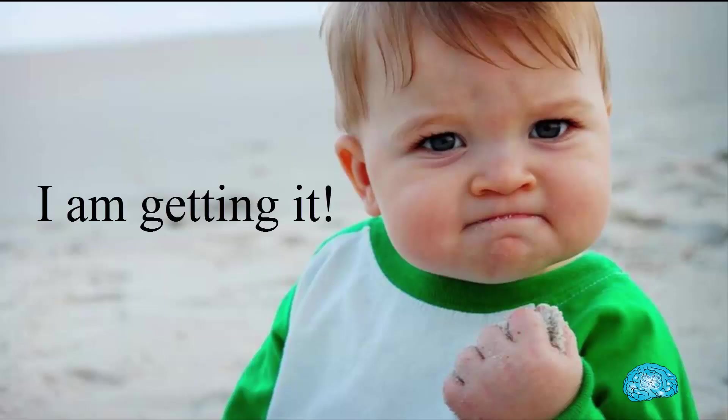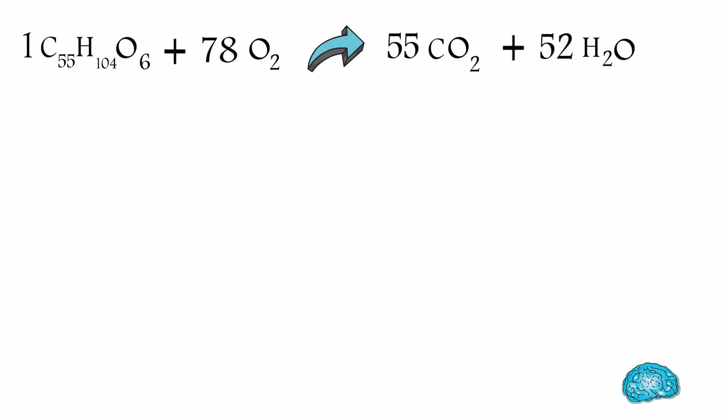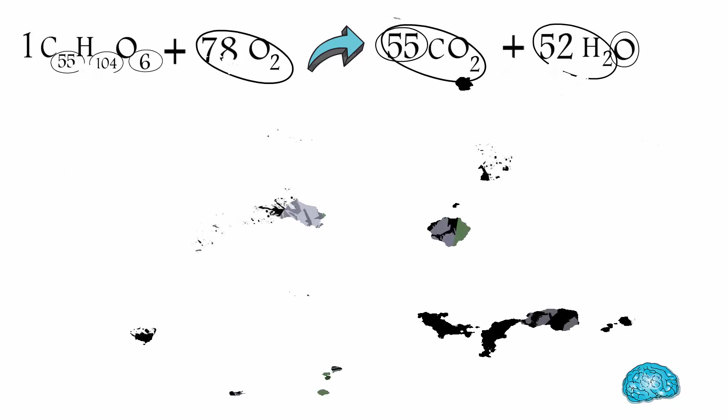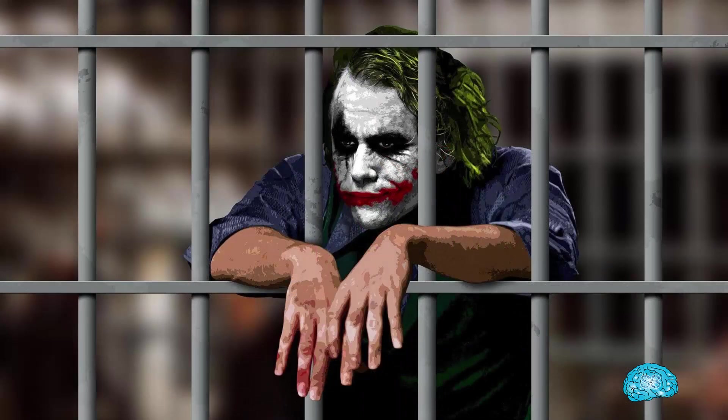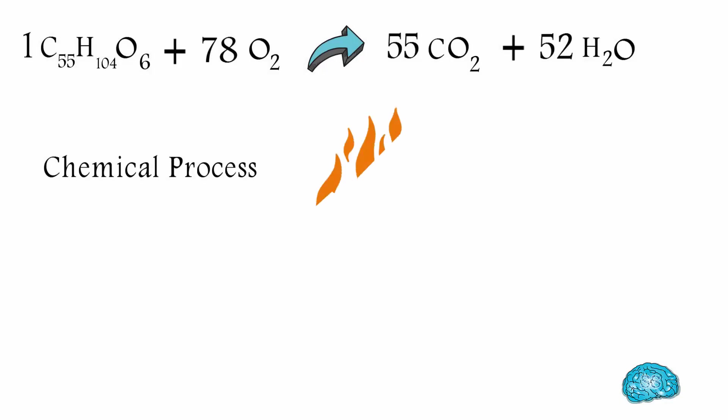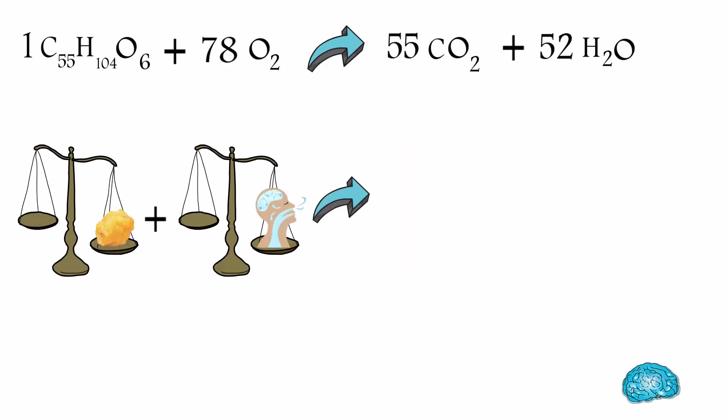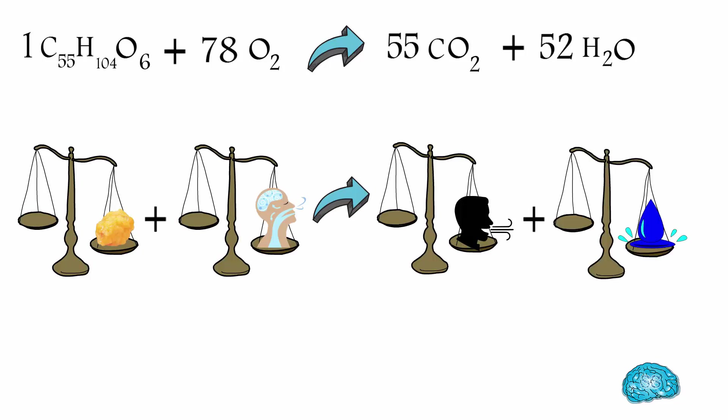Okay, I think I'm getting it now. So if we calculate the number of atoms on both sides, we can see 55 carbon atoms, 104 hydrogen atoms, and 162 oxygen atoms. Hence, mass is conserved, and the law is not broken. So that's the chemical process that burns fat and releases energy in your body. And talking about the mass, it is converted into carbon dioxide and water.